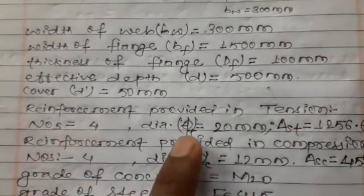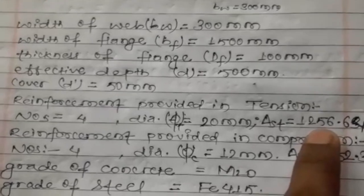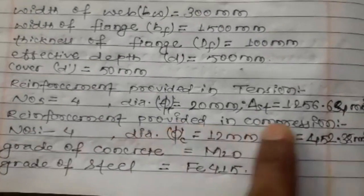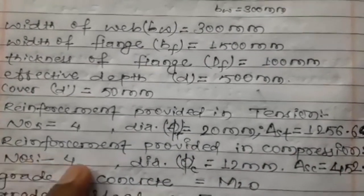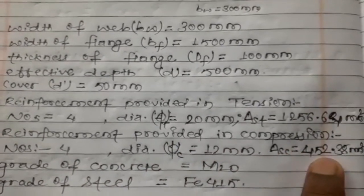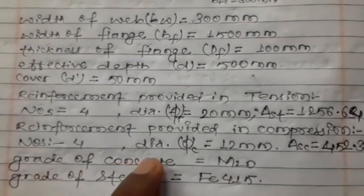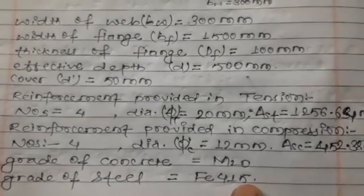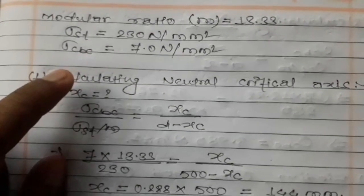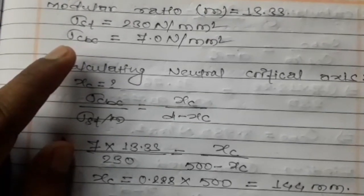Reinforcement in tension: 4 bars of diameter 20 mm, area = π × D² / 4 × 4 = 1256.64 mm². Reinforcement in compression: 4 bars of diameter 12 mm, area = 452.38 mm². Grade of concrete: M20. Grade of steel: Fe 415. Material data: modular ratio m = 13.33, σ_st = 230 N/mm², σ_cbc = 7 N/mm².